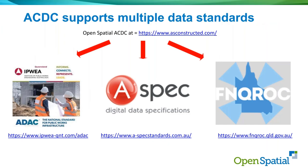ACDC has been built not as a specific standard configuration — it has been built to be configurable so that you can build anything with it. You can use ADAC with it, you can use ASPEC with it. There's Ref11, there's FMQROC in the US, and the national CAD standard with a universal data model. So ACDC and the portal is, by definition, a totally configurable system.